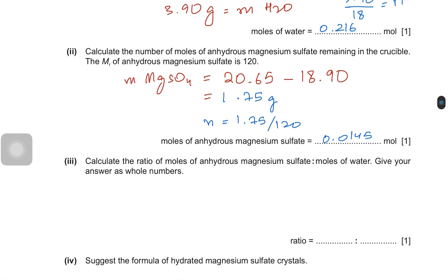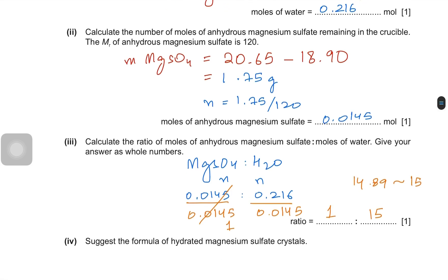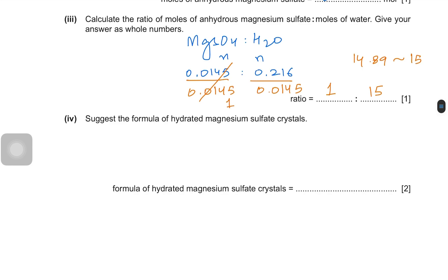Calculate the ratio of moles of anhydrous magnesium sulfate to the moles of water. So 0.0145 and 0.216. When we divide both by the smaller value, which is 0.0145, this becomes 1. And 0.216 divided by 0.0145 gives us 14.89. So that's almost 15. Suggest the formula of hydrated magnesium sulfate crystals. So MgSO4·15H2O.